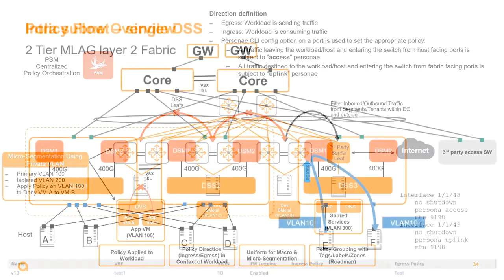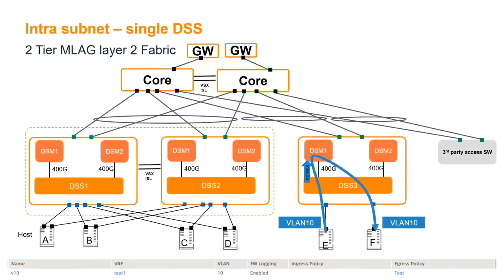In a single switch example, traffic entering the switch from the host is egress traffic from the host. If you want to inspect it, you apply an egress traffic rule. The DSM will inspect that traffic, and if the traffic is okay to forward, it will go ahead and forward it to the destination target host.